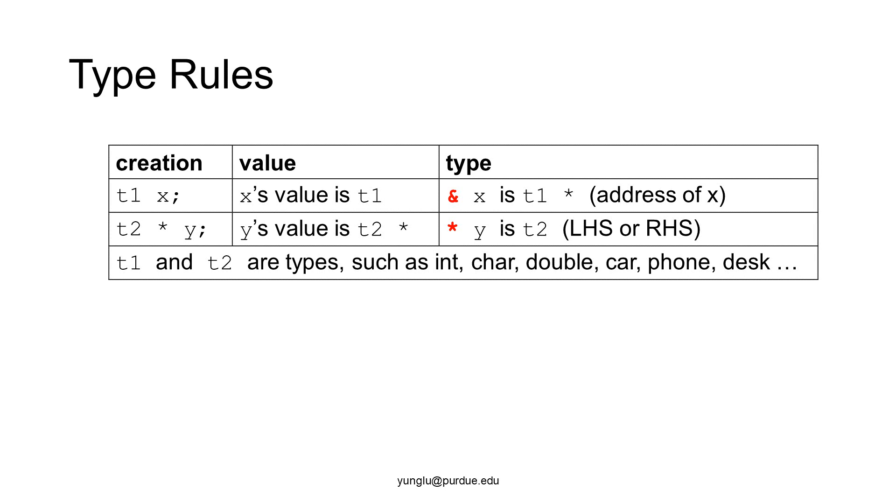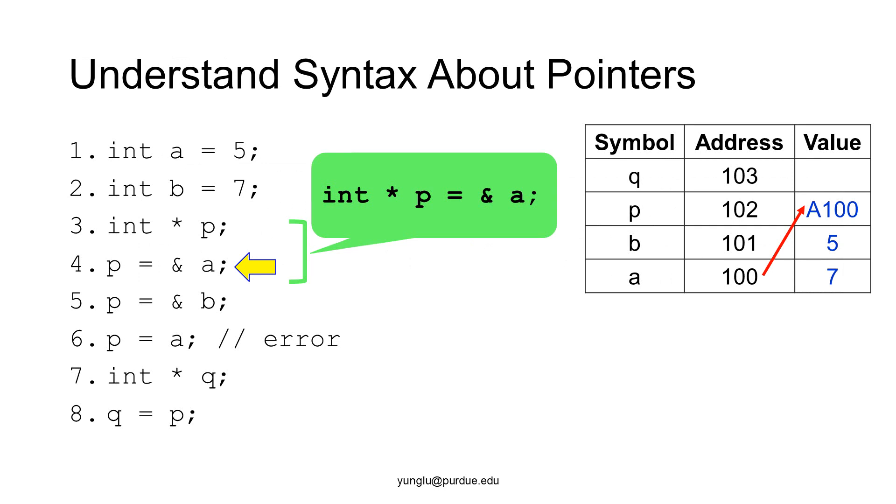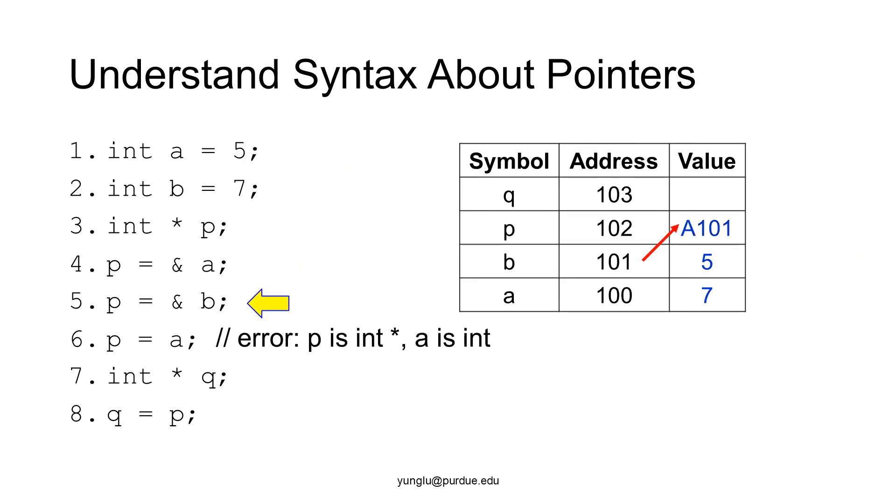Let's see some more examples. We first create an integer IE and its value is 5. Another integer B has value 7. The third line creates a pointer P. This pointer stores an address. At that address is an integer. The fourth line assigns the address of A to the value of P. Please notice that the third and fourth lines can be combined into a single line shown in the inserted callout here. They mean exactly the same thing. The fifth line changes the value of P to the address of B. Now the value of P is address 101. The sixth line is an error because the types do not match. P is an integer pointer and IE is an integer. The seventh line creates another integer pointer called Q. The eighth line assigns P's value to the value of Q. Thus, the value of Q is address 101.